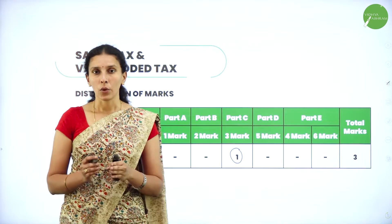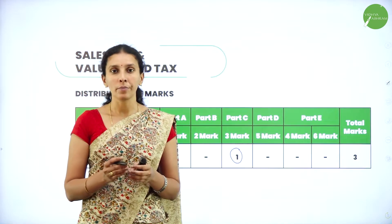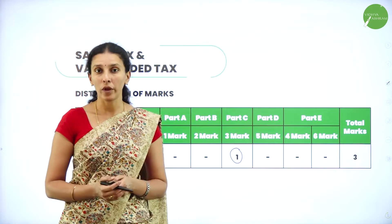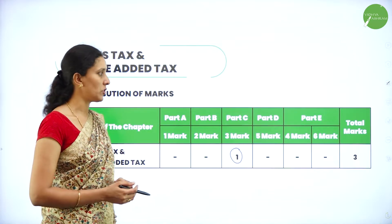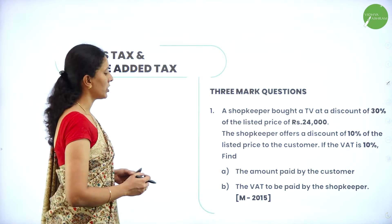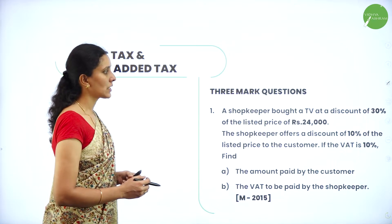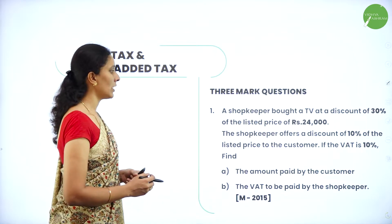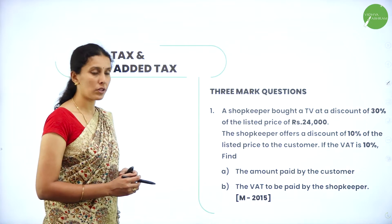Let's see the questions asked in previous year question papers and the types of questions they may ask from this chapter. Here is a question: a shopkeeper bought a TV at a discount of 30 percent of the listed price of rupees 24,000.